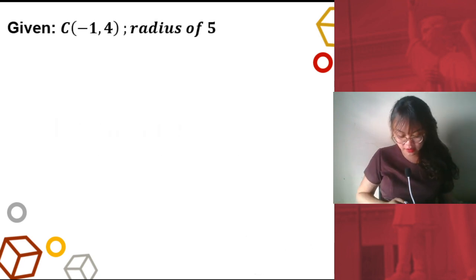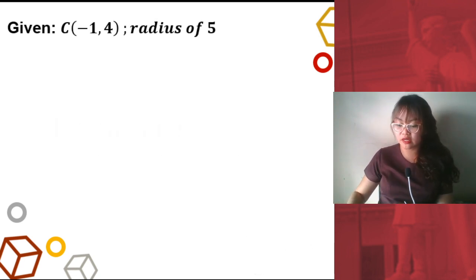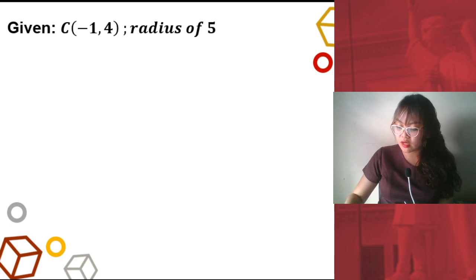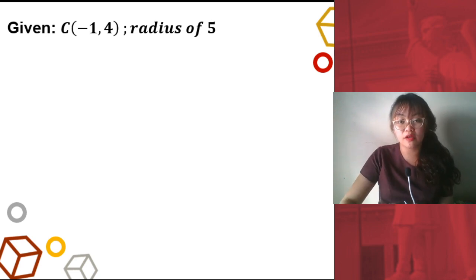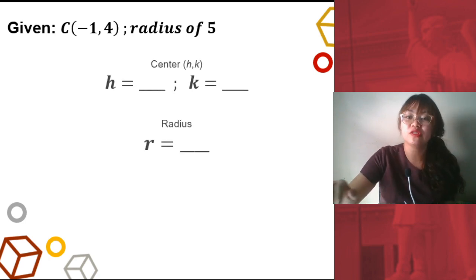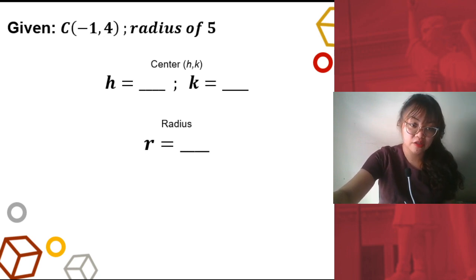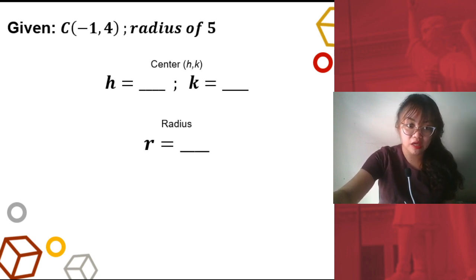Try this one. Our given is c equals negative 1, 4 — so the center has coordinates negative 1, 4 — and the radius is 5. First, I want you to identify the coordinates of the center: the value for h, for k, and for r.